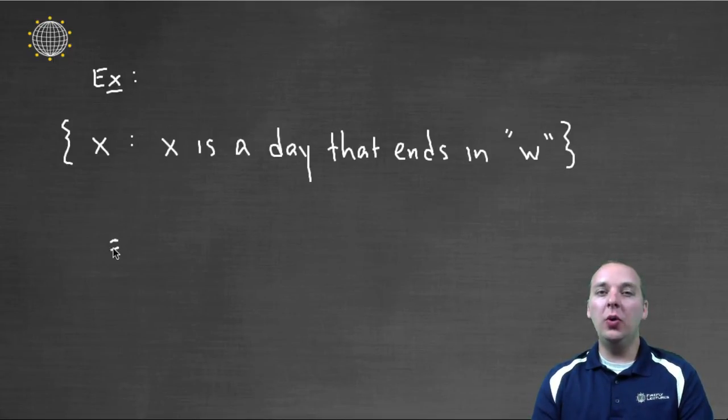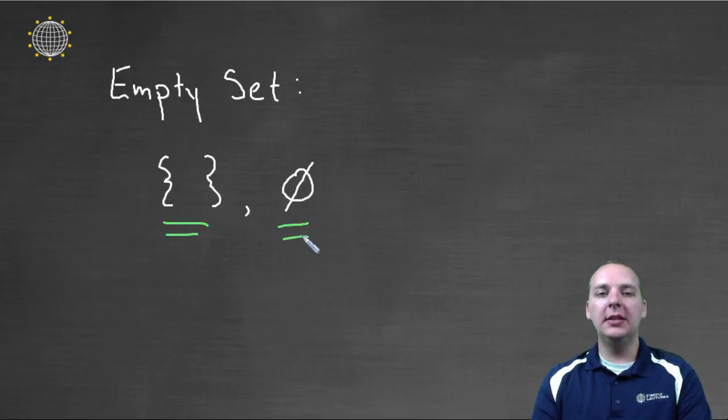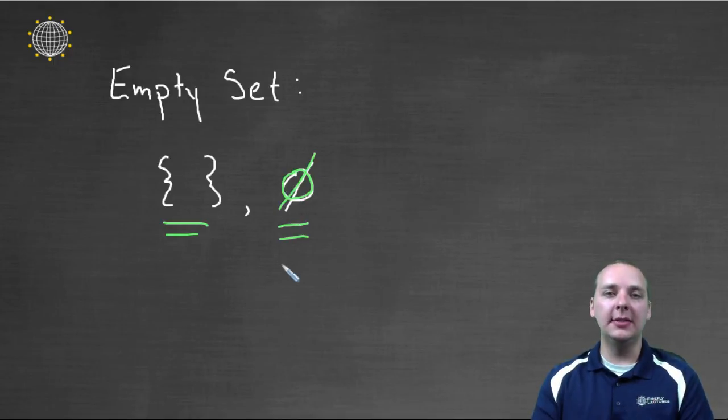So this would be equivalent to a set that doesn't have anything in it. And that's just kind of strange. Well in fact it's not strange at all. We even have a name for this. This is called the empty set. So anytime you have a set that doesn't have any elements in it, you can write that notation wise like this. Just empty brackets with nothing in the middle. Or often times you'll see this notation where they'll write a circle with a slash through it. And that also means the empty set.